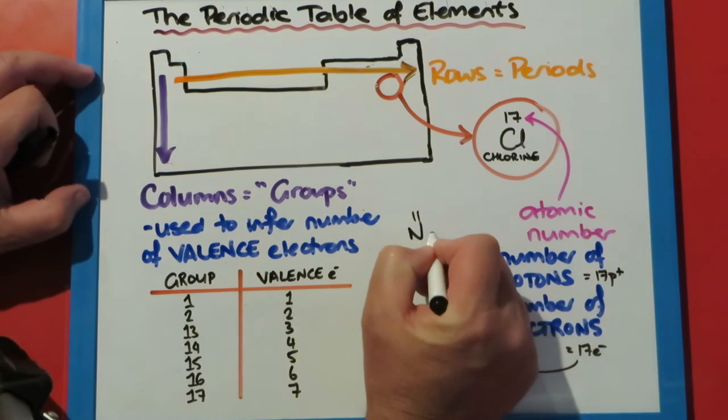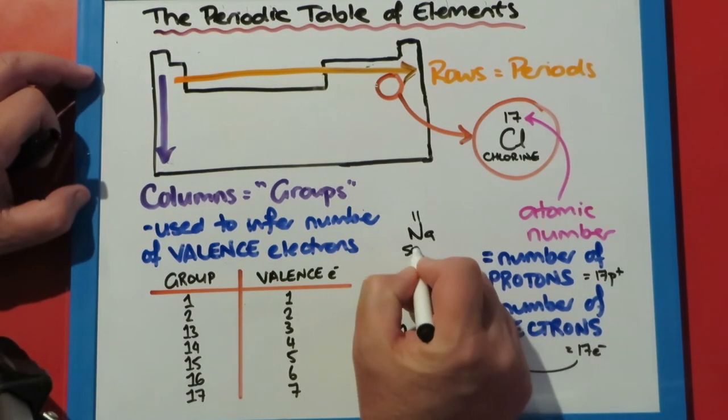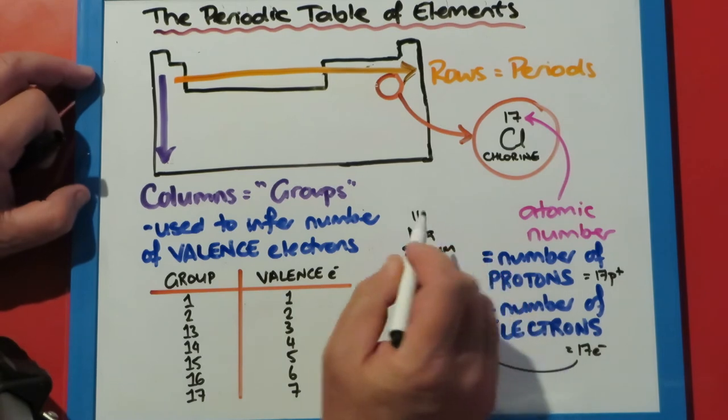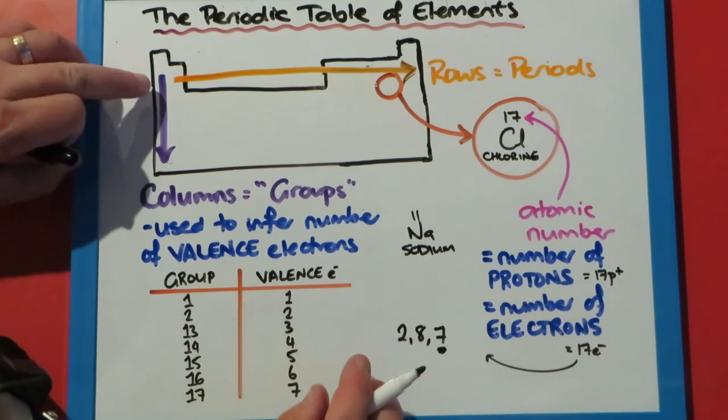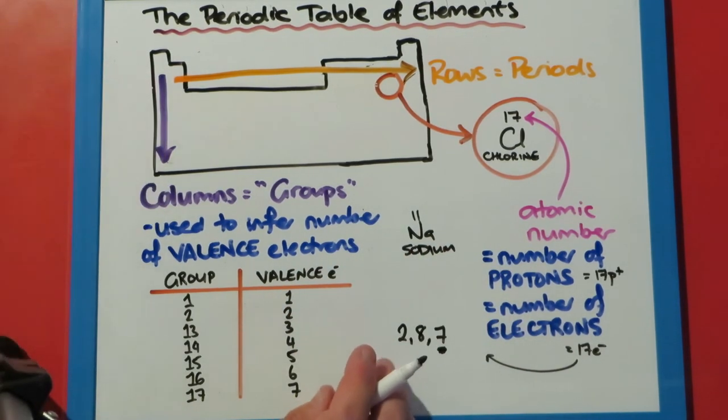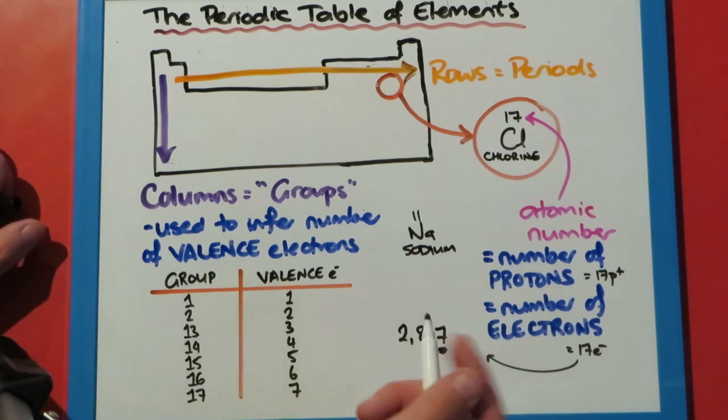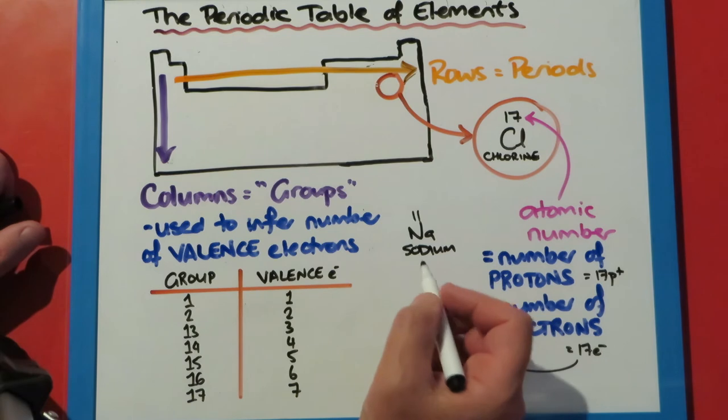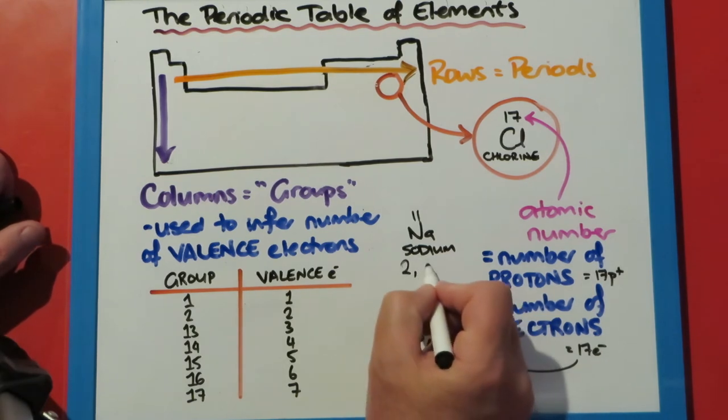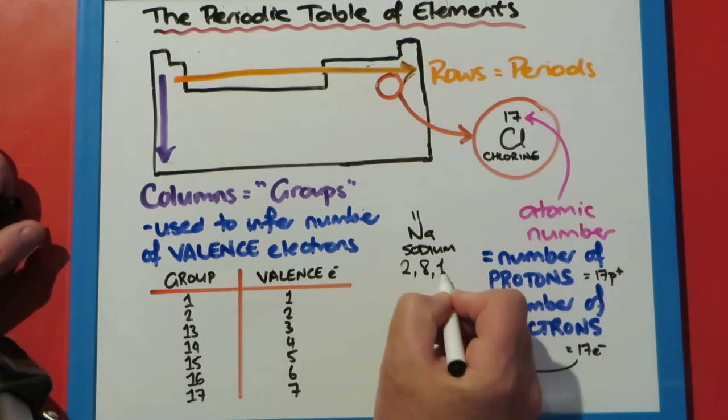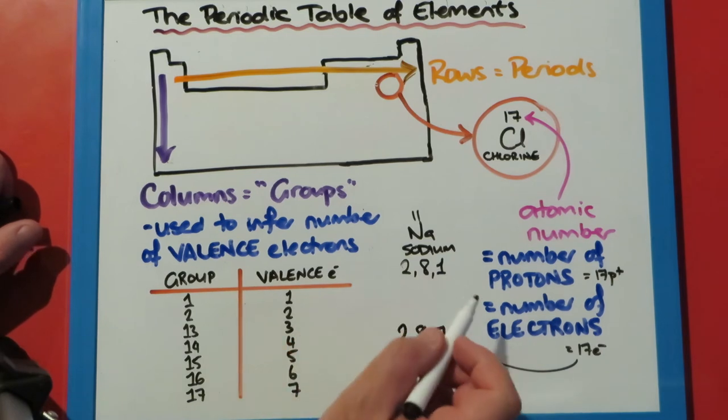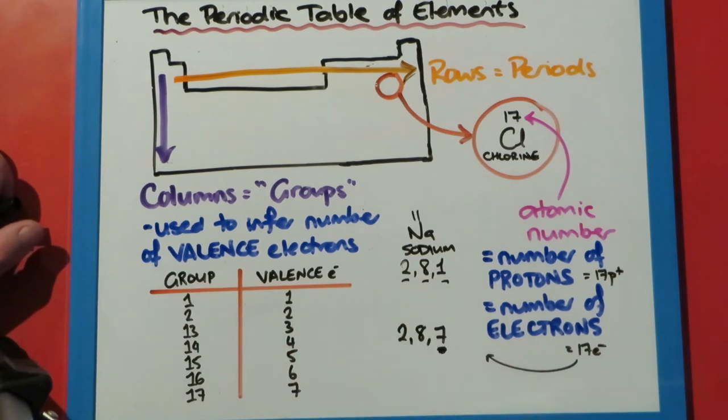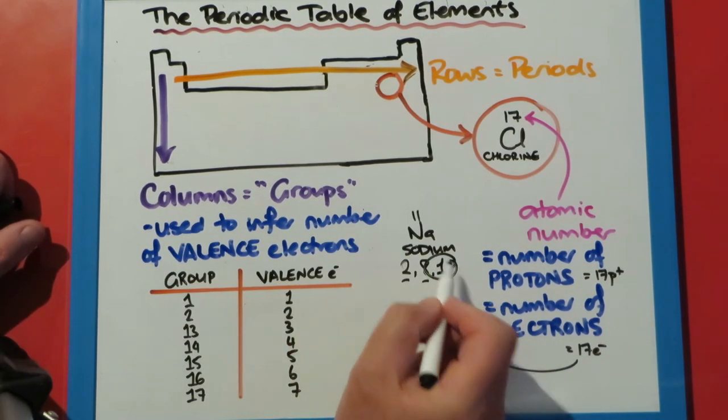Sodium: we'd expect it, as number 11, being placed out where the purple and the orange meet, to have three energy levels. It's got 11 protons, so it has 11 electrons. Two, eight, that still leaves one left. So 2, 8, 1. There's our three energy levels for being in the third period. There's our one for it being in group 1.